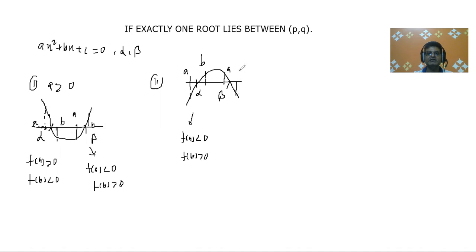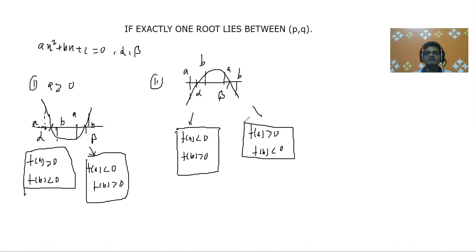If I take here a and here b, then you can see that f(a) is greater than zero and f(b) is less than zero. So what we are finding that somewhere f(a) is positive, f(b) is negative. Here somewhere f(a) is negative and f(b) is positive.